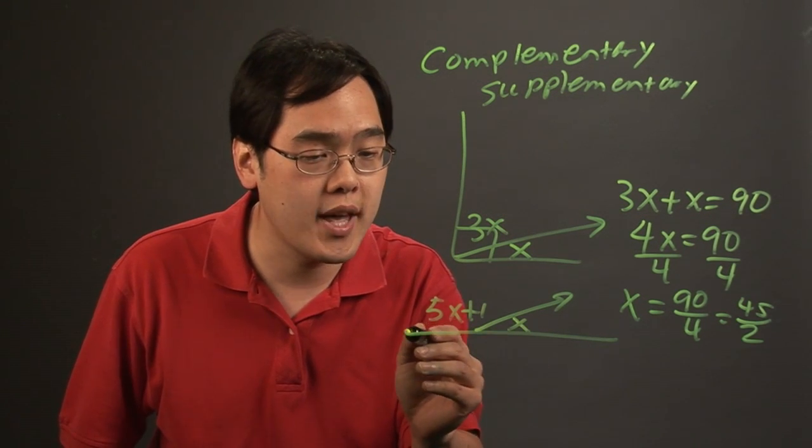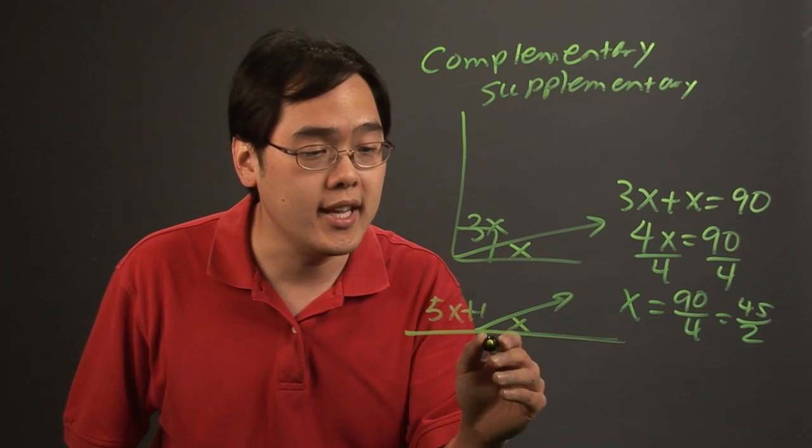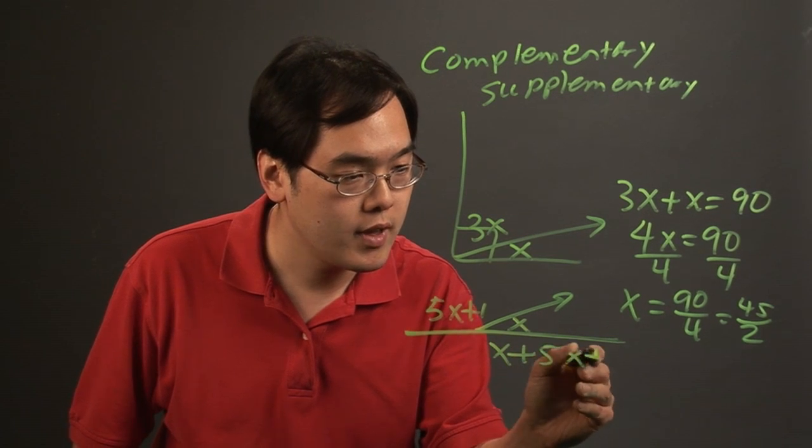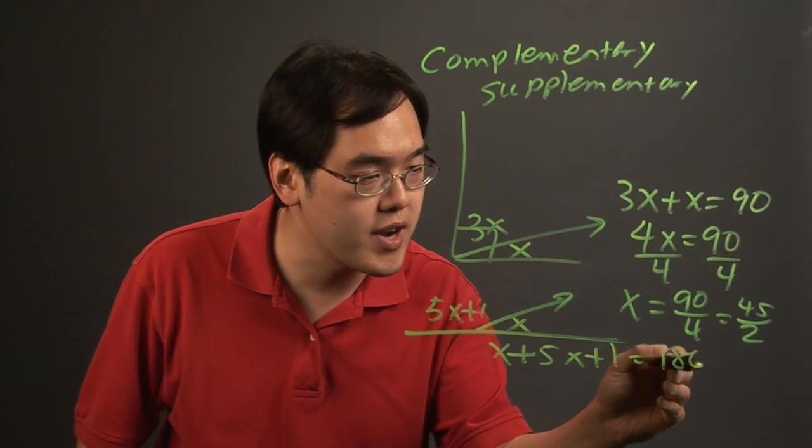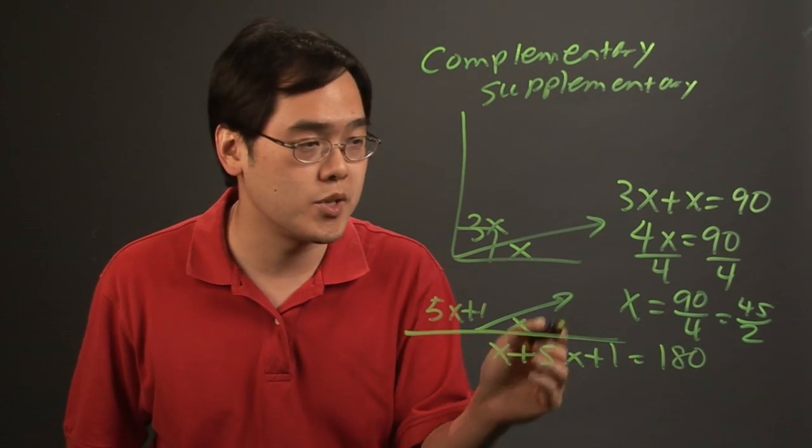So the idea here is because you know that they'll add to give you 180, you're just taking the two angles and adding and setting it equal to 180 degrees and then solving it in a very similar way that you did up here.